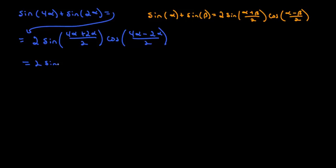So that'll be 2 times the sine of 6 alpha over 2, times the cosine of 2 alpha over 2.